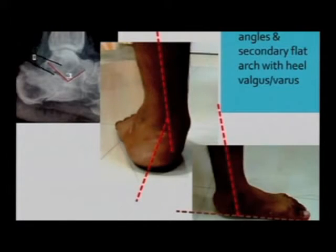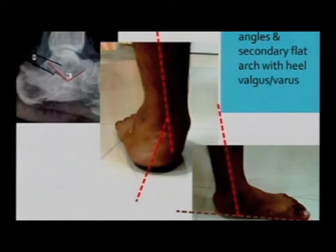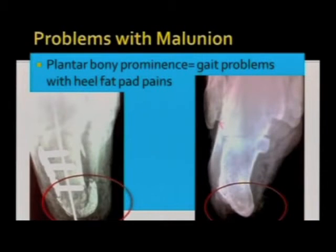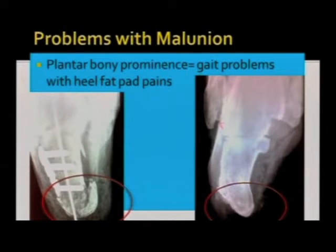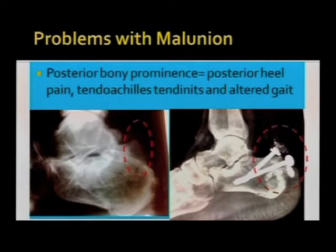There could be distortion of angles and secondary flat arch, mostly with heel varus, but sometimes the heel could even be in valgus as in this case. The other important problem is a plantar bony prominence, as in this malunited calcaneal fracture — the patient would have a gait problem and heel fat pain. Sometimes this posterior bony prominence would give posterior heel pain, tendo-Achilles tendinosis, and alteration of gait.